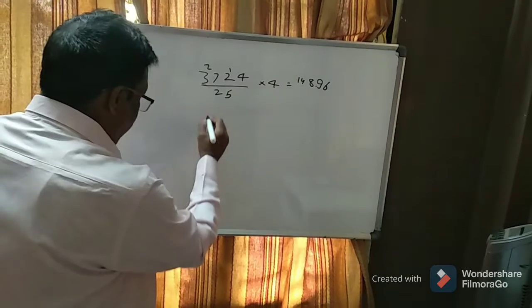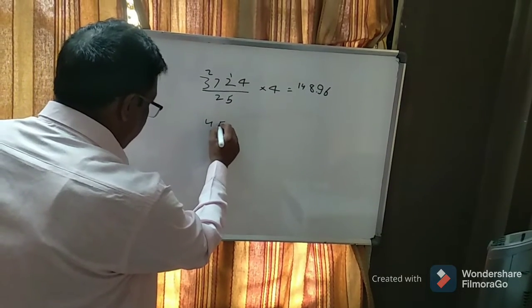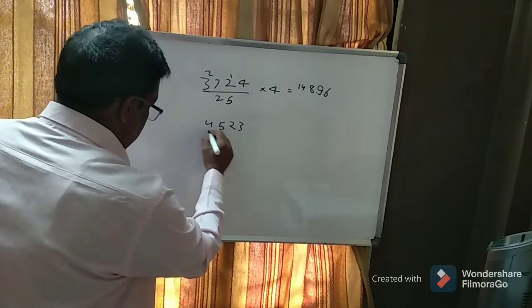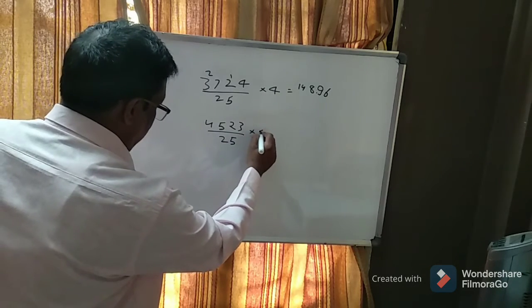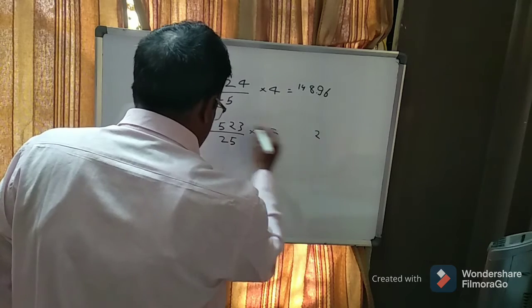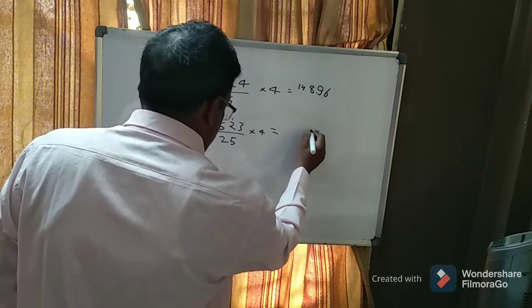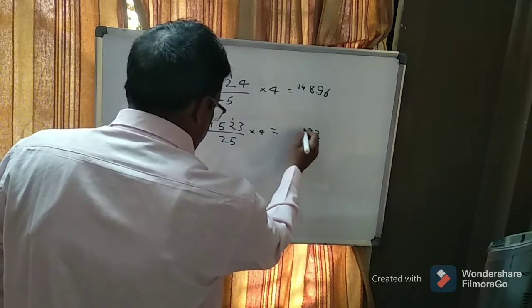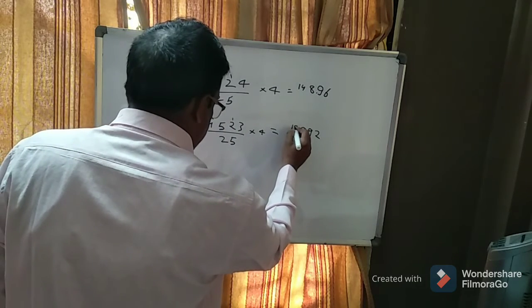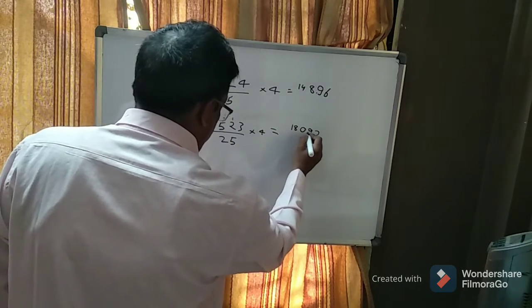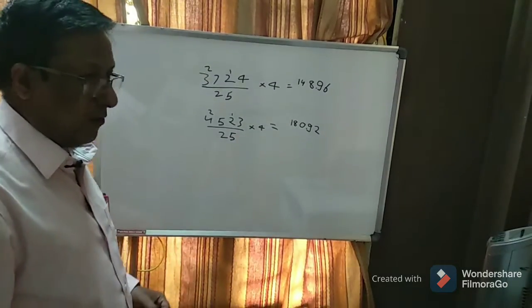Take another number for that, 4, 5, 2, 3, divisible by 25. Again, multiply the given number by 4. You get 4 times 3 is 12, carry 1. 4 times 2 is 8, plus 1 is 9. 5 times 4 is 20, carry 2. 4 times 4 is 16, plus 2 is 18. Leave 2 digits, put a point over here, your answer is 180.92.